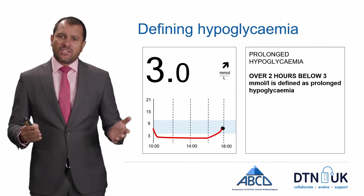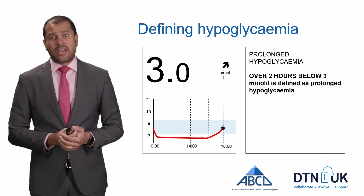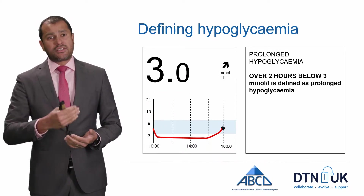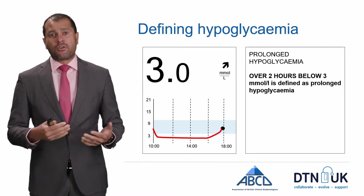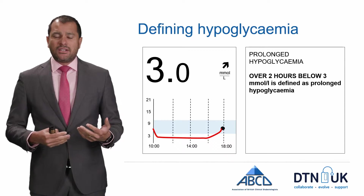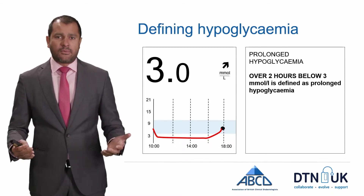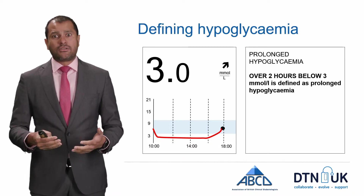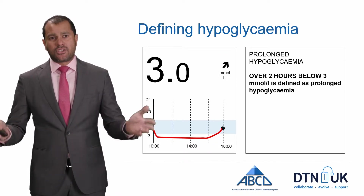With CGM we now get glucose data going back over the last eight hours, and often people might wake up and find that the blood sugar has been below 3 for a long period. With CGM there's a new category of hypoglycemia — prolonged hypoglycemia — defined as a sensor glucose below 3 millimoles per litre for at least two hours.